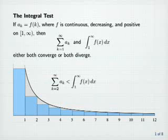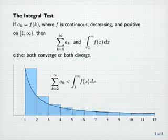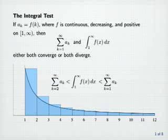Now let's shift all of these rectangles to the right one unit. Then the region under the curve is contained inside the union of all of the rectangles, and consequently the integral from 1 to infinity of f of x dx is less than the sum from k equals 1 to infinity of a sub k. This proves that if the series is finite, then the improper integral is also finite.